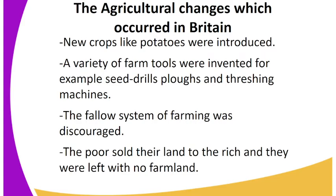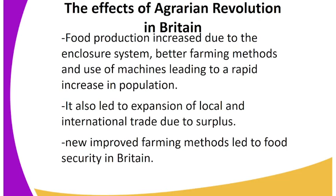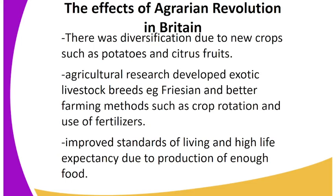Various new farm tools were invented, for example seed drills, ploughs, and threshing machines. The fallow system of farming was discouraged, and the poor sold their land to the rich and were left with no land. Food production increased due to the enclosure system and better farming methods, and this led to the expansion of local and international trade.